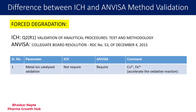The first parameter in forced degradation is metal ion catalyzed oxidation. Parameters like hydrolysis, thermal degradation, and photolytic degradation follow in a similar way in both guidelines. Oxidation by hydrogen peroxide is also common between ICH and ANVISA. However, the additional requirement in ANVISA — which is not part of ICH — is metal ion oxidation. ICH does not mention metal ion oxidation, but according to the ANVISA guideline, metal ions such as copper (Cu²⁺) and iron (Fe³⁺) must be used during the study.